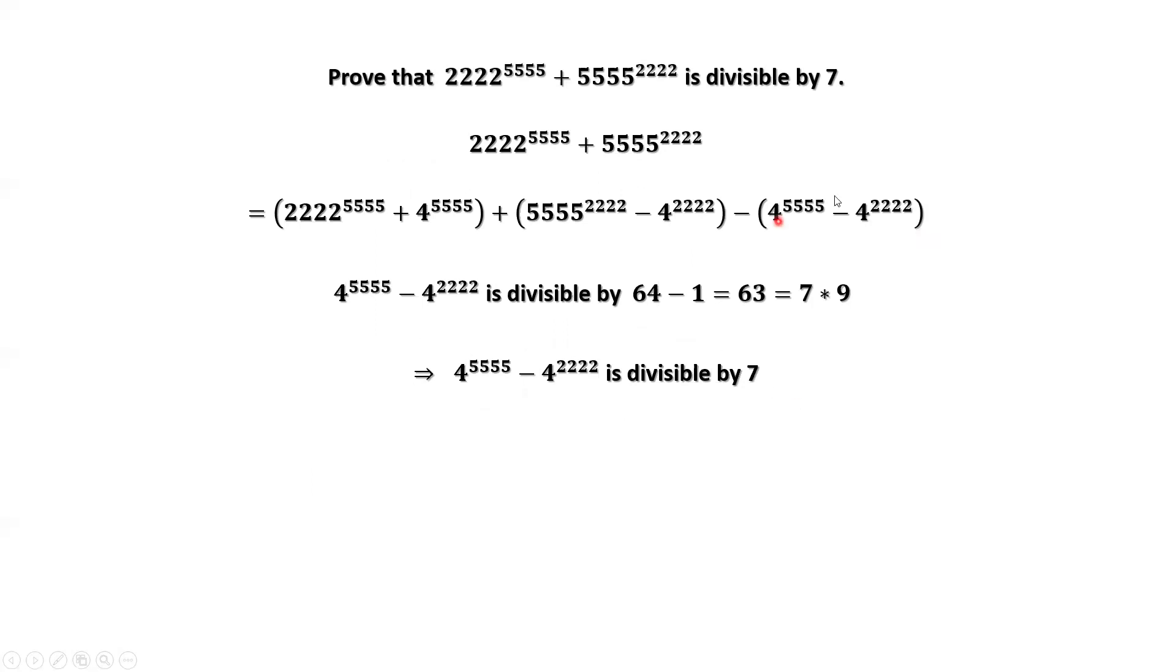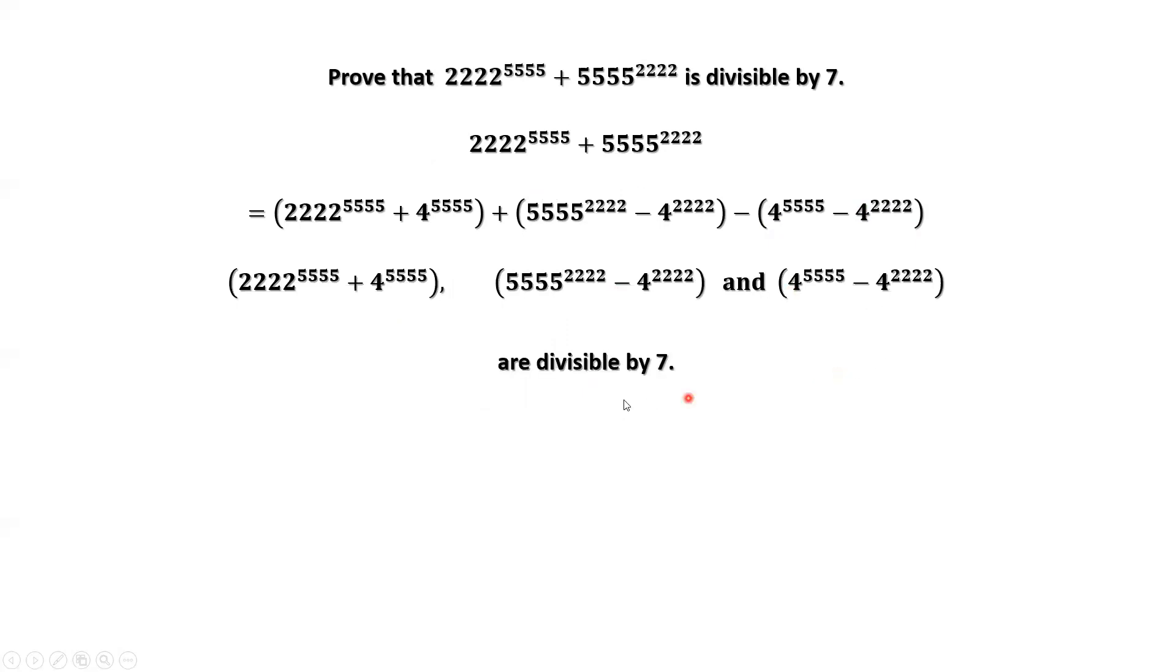Therefore, this right-hand side is divisible by 7 because all three groups are divisible by 7. Therefore, the left-hand side is also divisible by 7. That's all. Thanks for watching and I'll see you next time.